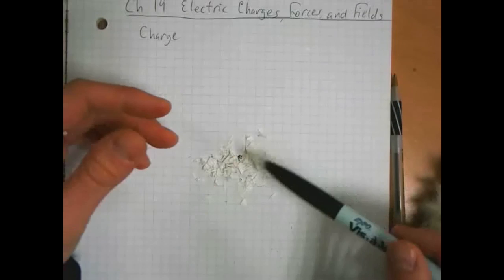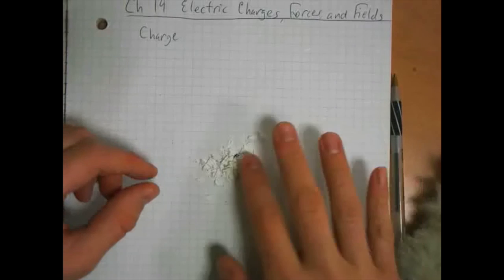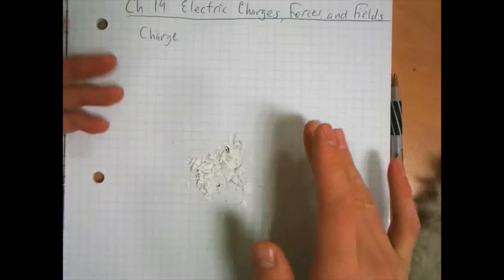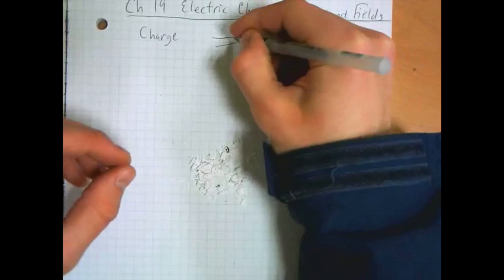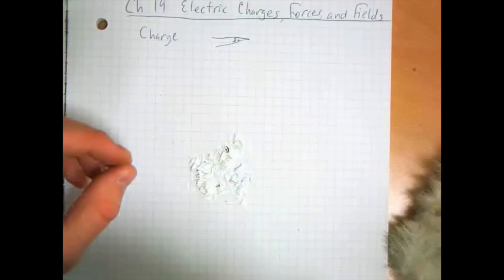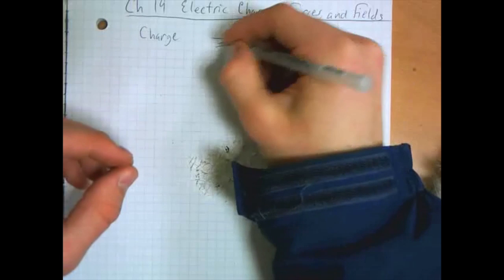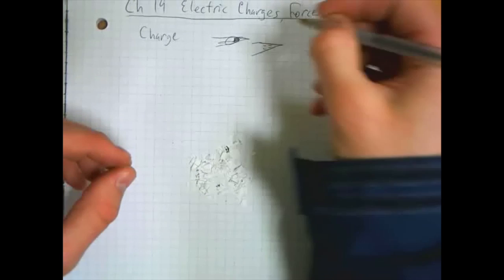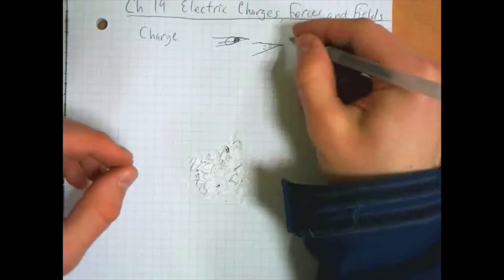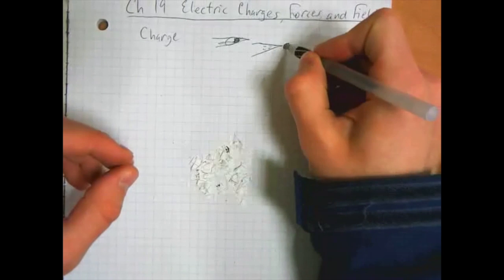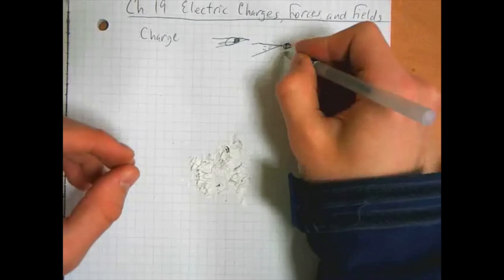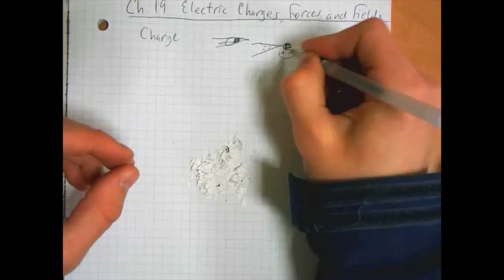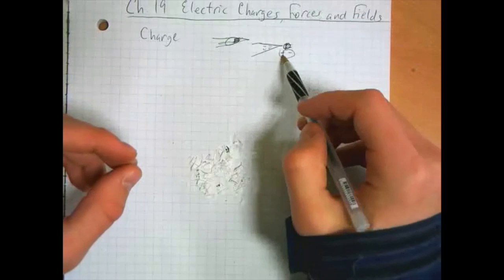Why would it be that something with no charge, like this paper, would be attracted to something with a charge? Well, there are charges in these little bits of paper. There's an equal amount of positive and negative charges. Say we have our pen and it's negatively charged because it would take the electrons from the fur. When you bring these negative charges close, the positive charges will move toward those negative charges and the negative charges will move away. And so it becomes polarized. There are positive charges closer, negative charges further away. And when it's polarized, it will stick to other objects.